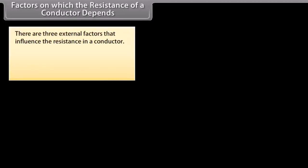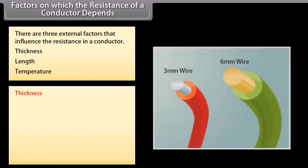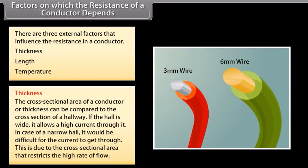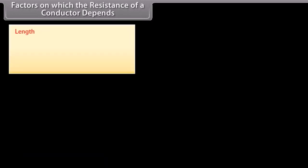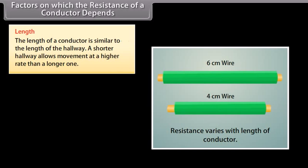There are three external factors that influence the resistance in a conductor: thickness, length, and temperature. There is also a fourth factor — the conductivity of the material — which is considered an internal factor. The cross-sectional area, or thickness, can be compared to the cross section of a hallway: a wide hall allows a high current through it, while a narrow hall restricts flow. Similarly, a shorter conductor allows current to flow at a higher rate than a longer one.